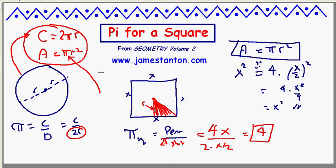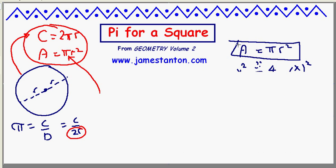Area is pi r squared. So the value of pi for a square I claim is 4, and I've got good justification for it, because C equals 2 pi r, and A equals pi r squared, still work.